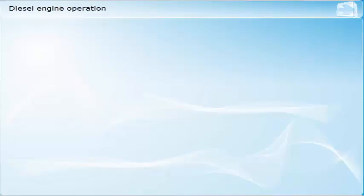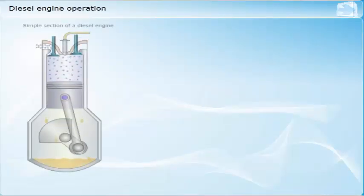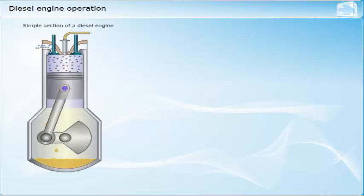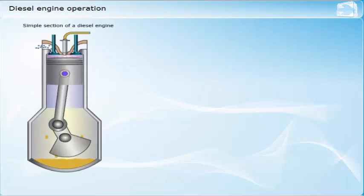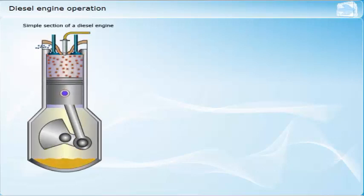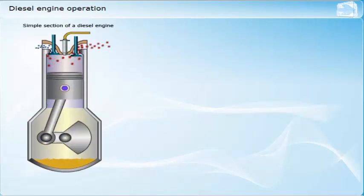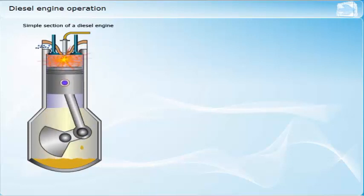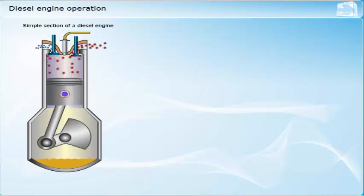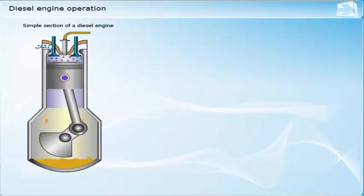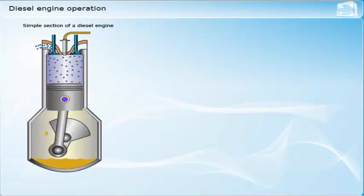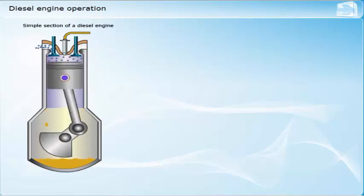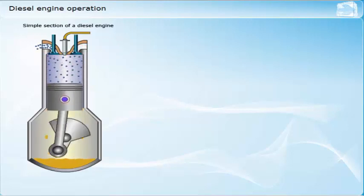Diesel engines are machines designed to convert the chemical energy of fuel to mechanical energy in order to produce power. This power is then used to do work, which may be done in turning a propeller to drive a ship, or to drive an electrical generator to provide electrical power.